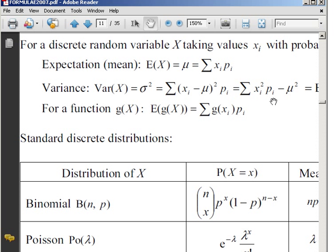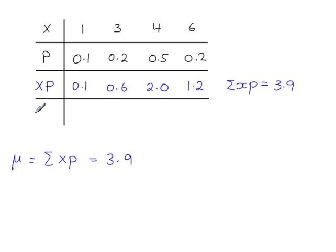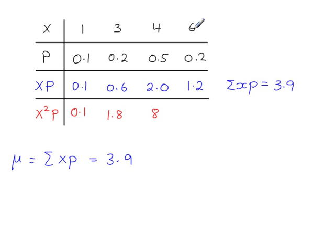Let's work out x squared times p first. So in the table you need another row: x squared times p. Take the value of x and this value of p. 1 squared is 1, times 0.1 gives you 0.1. 3 squared is 9, times 0.2. 4 squared is 16, times 0.5. 6 squared is 36, times 0.2. Now we work out the sum of all of these values: sigma x squared times p.